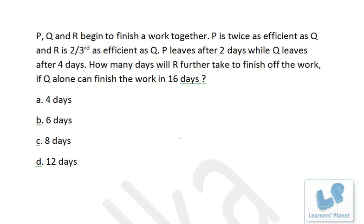See, capacity of Q is 16 days. That means Q alone can finish the work in 16 days and P is twice as efficient. That means he'll be taking half of the days taken by Q. That means P will be taking 8 days. So that's P, Q and R. Q 16, P 8.